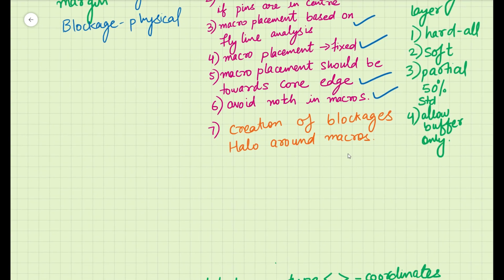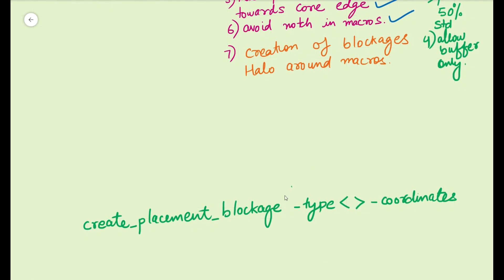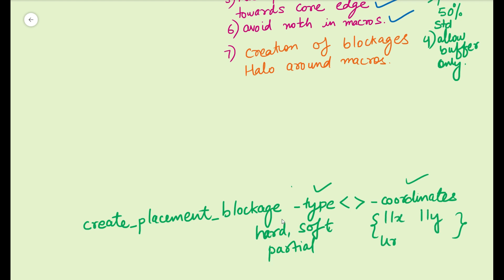The command to create a placement blockage in the tool is: 'create_placement_blockage', then '-type', and then '-coordinates'. In '-type', you can specify hard, soft, or partial. In coordinates, you specify the values in curly braces: lower-left X, lower-left Y, and then upper-right X and upper-right Y. These are the types of placement blockages you can specify — this is a tool-related command.